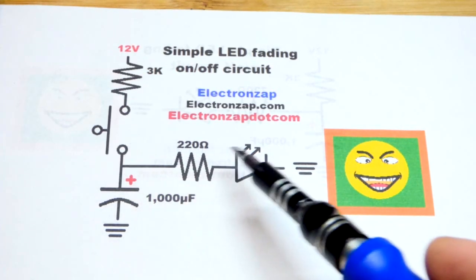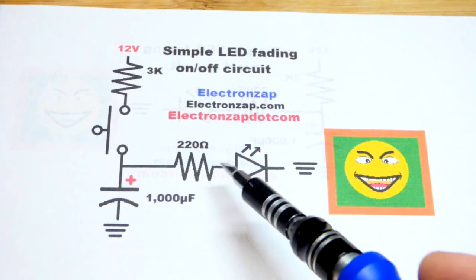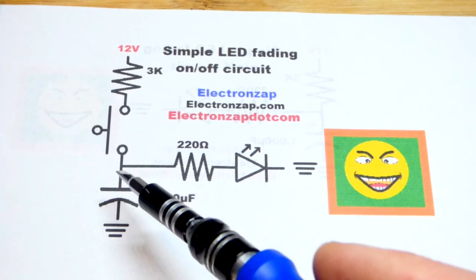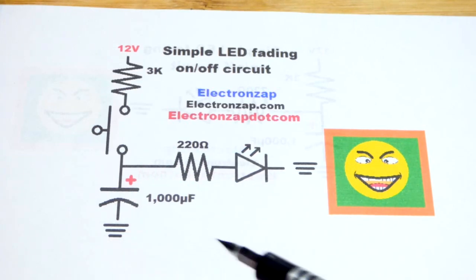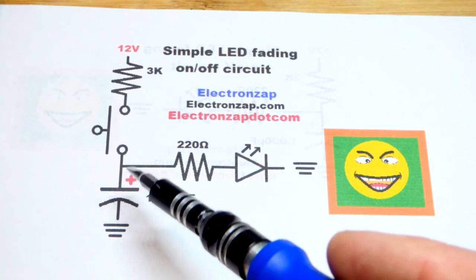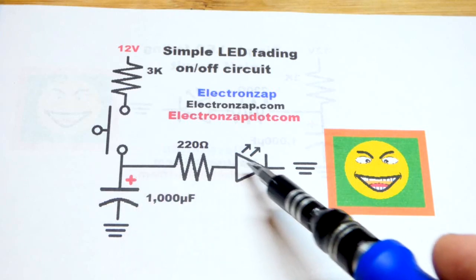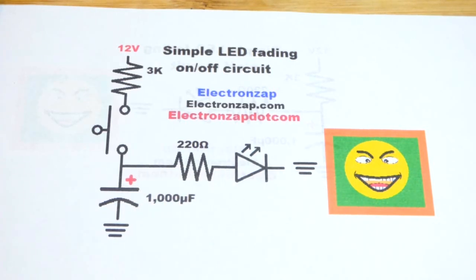Now when we reach steady state or even before that we release the switch, then the capacitor has to provide all the power and it's going to discharge quickly. Its voltage is going to drop and the LED is going to fade over time.